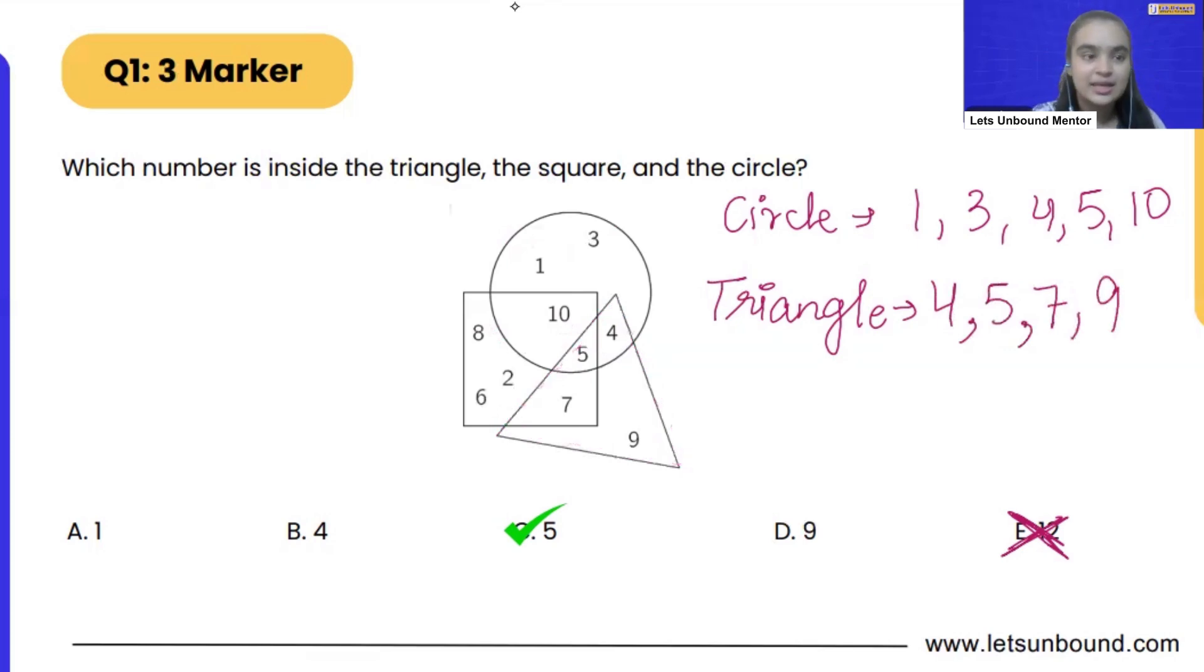Now let's see square. What all numbers are there in square? So in square we are having 8, 2, 6, 7, 10 and 5. Now I want you to pause the video and tell me which number is repeating in circle, triangle and square. All three shapes. So if you will see only number 5 is there which is repeating in all the shapes. So that means 5 is our correct answer.